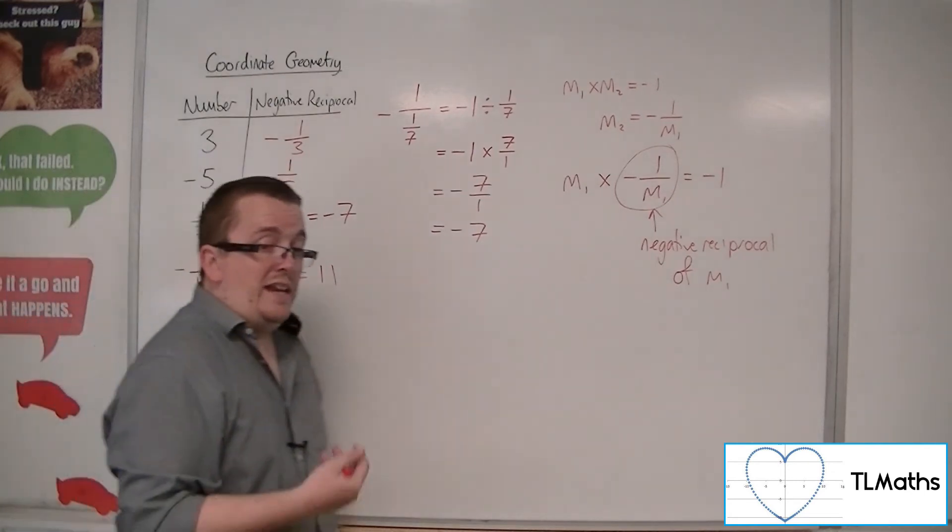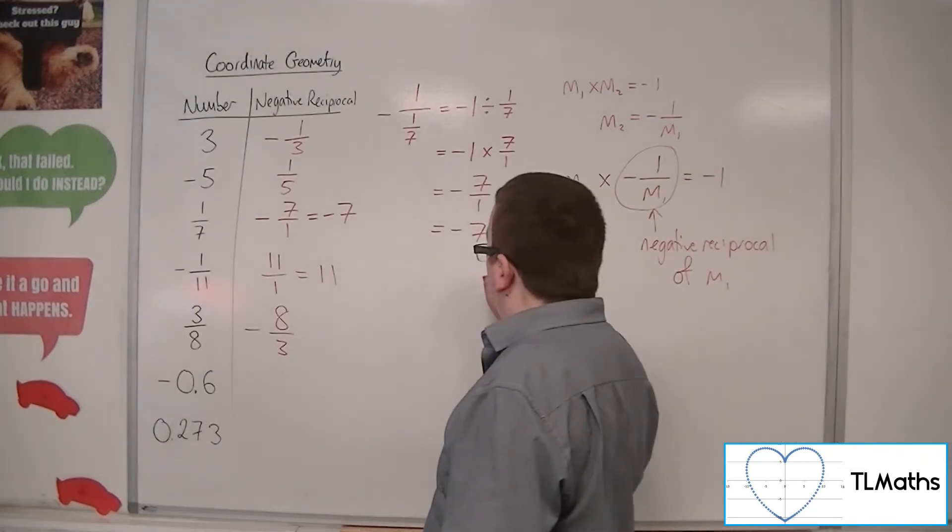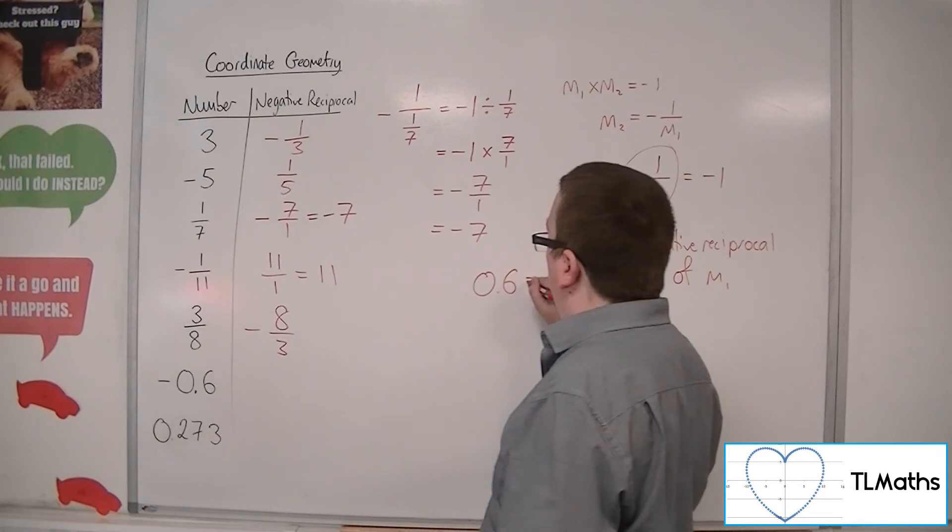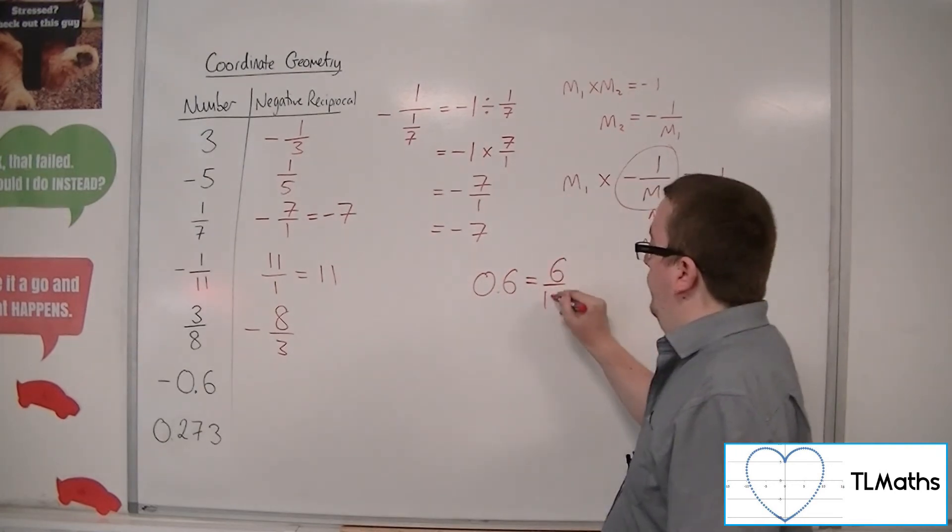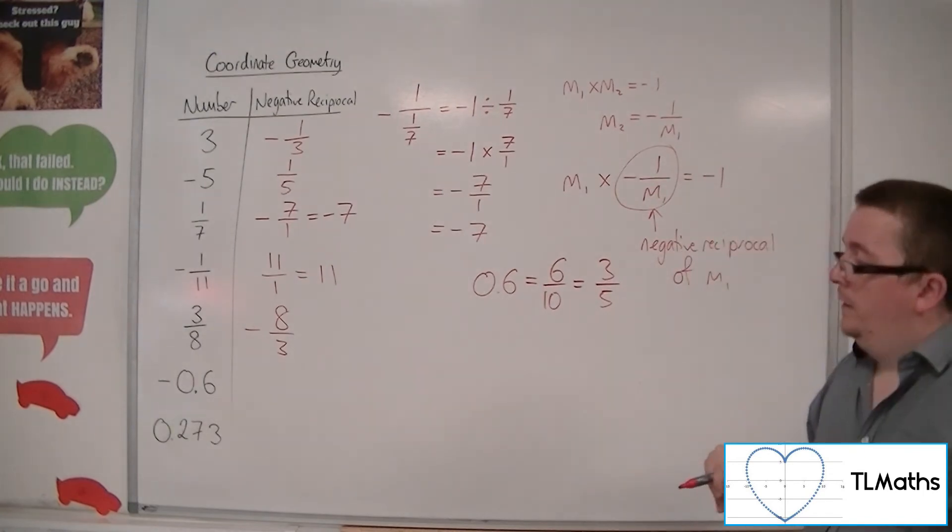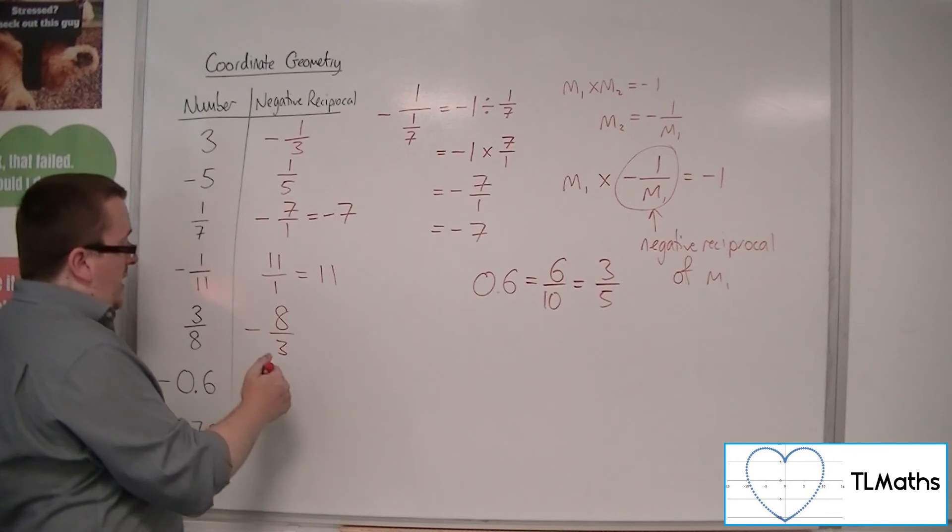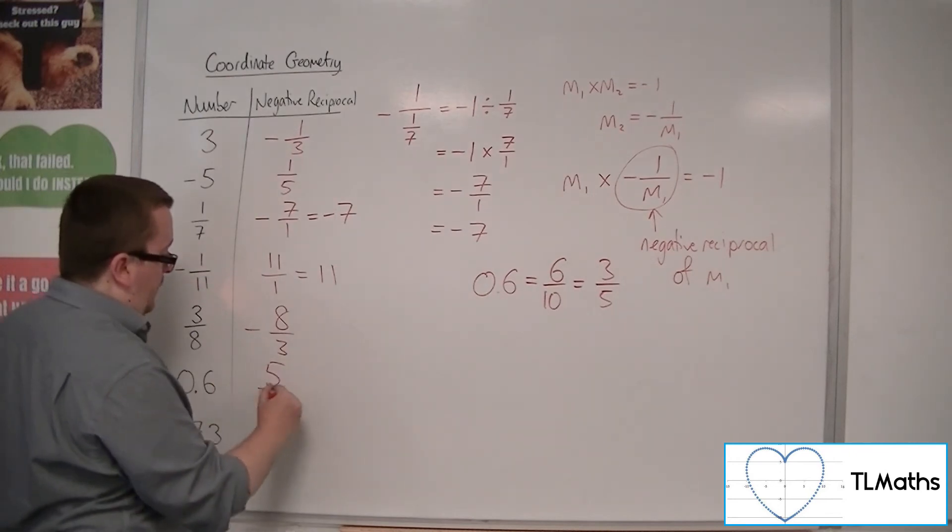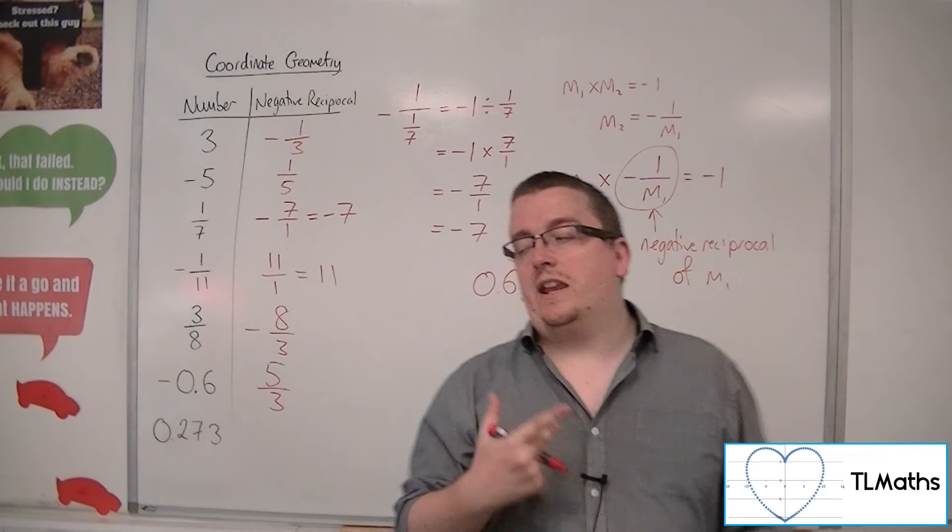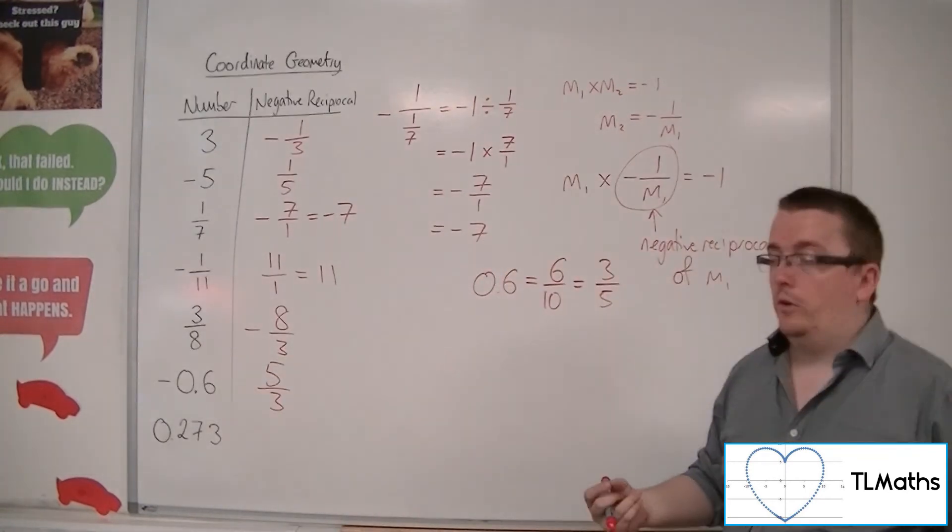Now, when you get to decimals, you might need to put a little bit more thought into it. Now, 0.6 is 6 tenths, which is 3 fifths. So we've got minus 3 fifths here. So that will become positive 5 thirds. You can check in your calculator by doing minus 1 over minus 0.6.